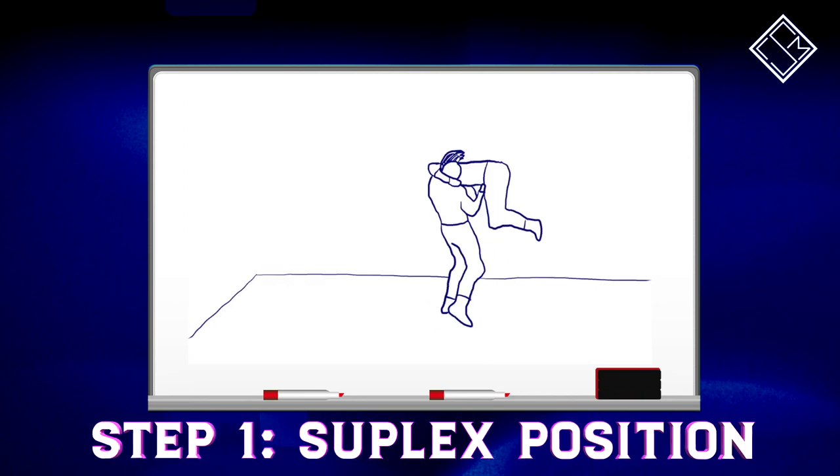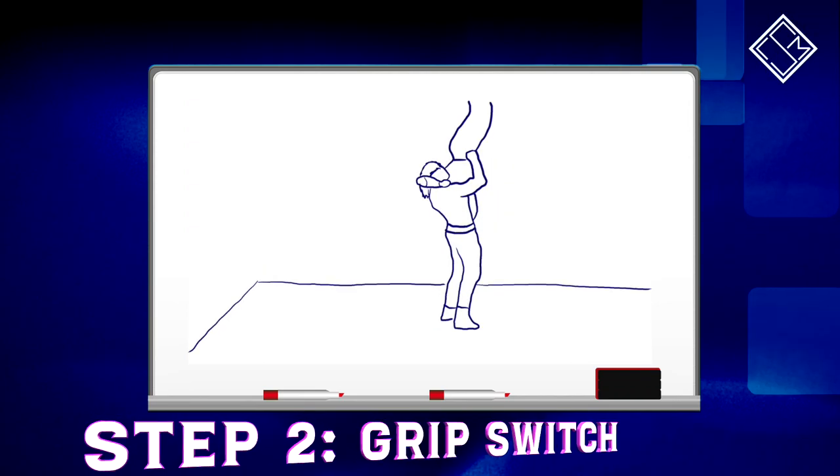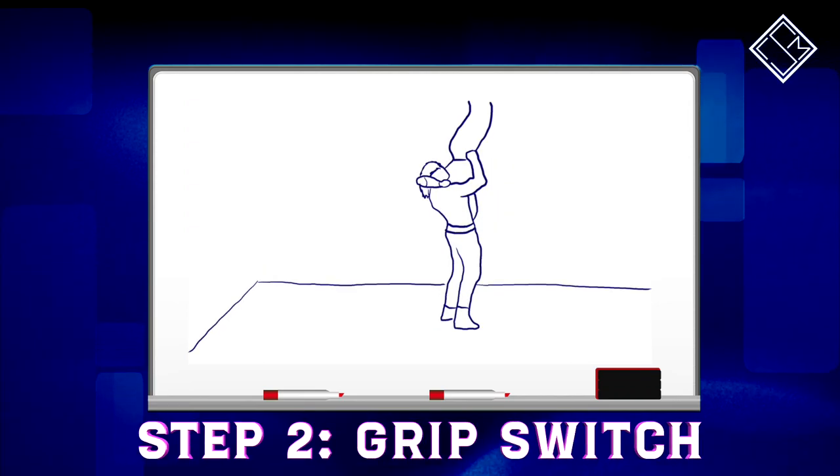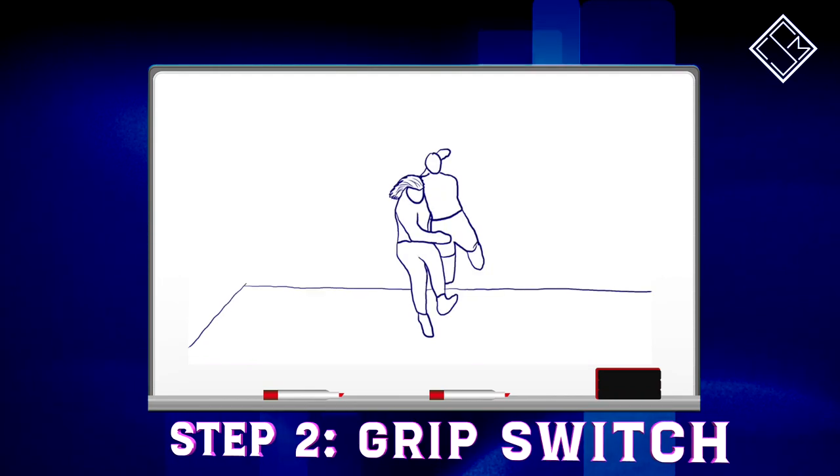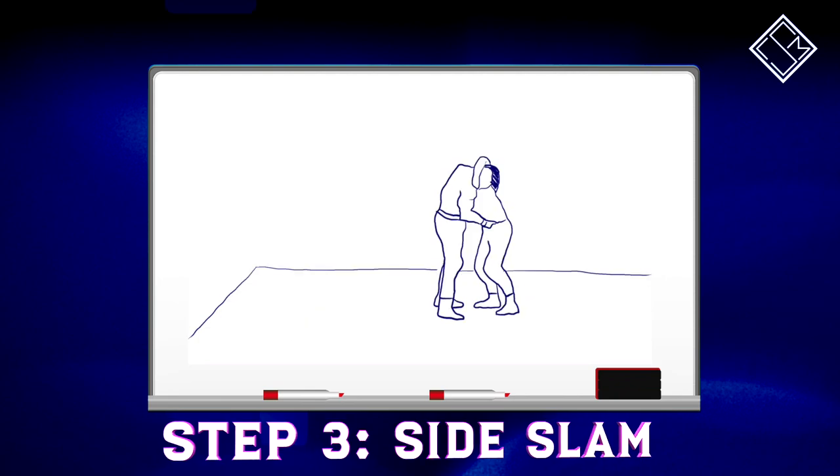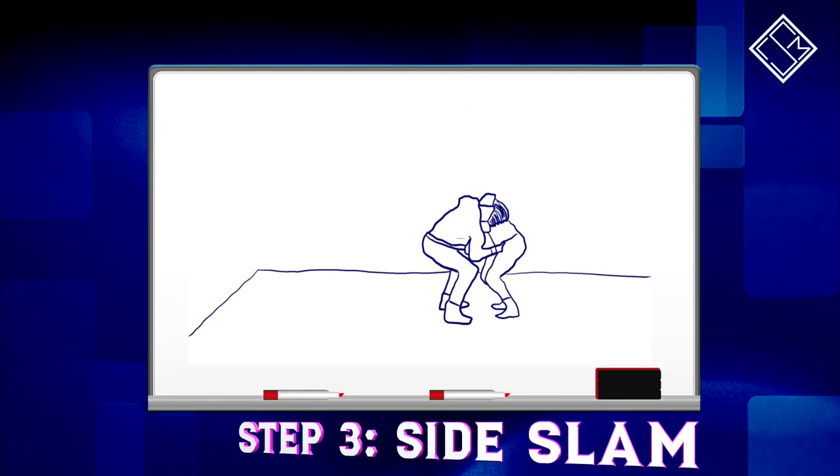Once Hammerstone lifts the opponent up into the vertical suplex position, Hammerstone almost immediately changes his grip from the front facelock by extending his left arm over the opponent's chest. Having done so in such a quick manner, Hammerstone gets a great amount of momentum in order to slam the opponent down in the sideslam position.